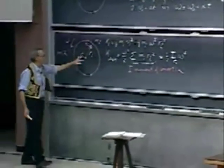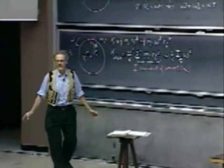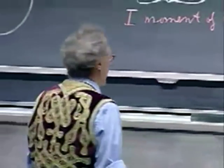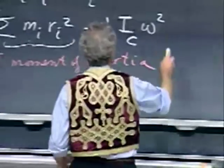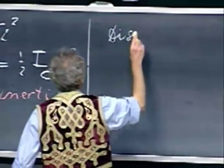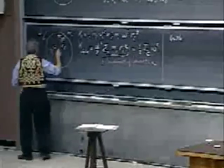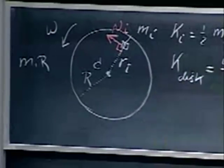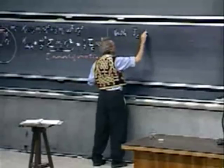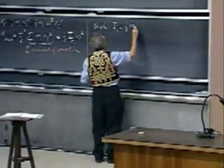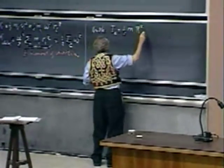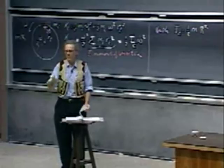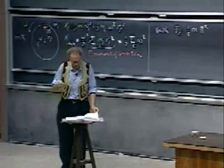The moment of inertia is a boring mathematical job—it's some integral. For nicely symmetric objects you can do it. For a solid disk rotating about an axis through the center perpendicular to the disk, the moment of inertia equals ½MR². I wouldn't expect you to remember this; there are tables in books—look them up.